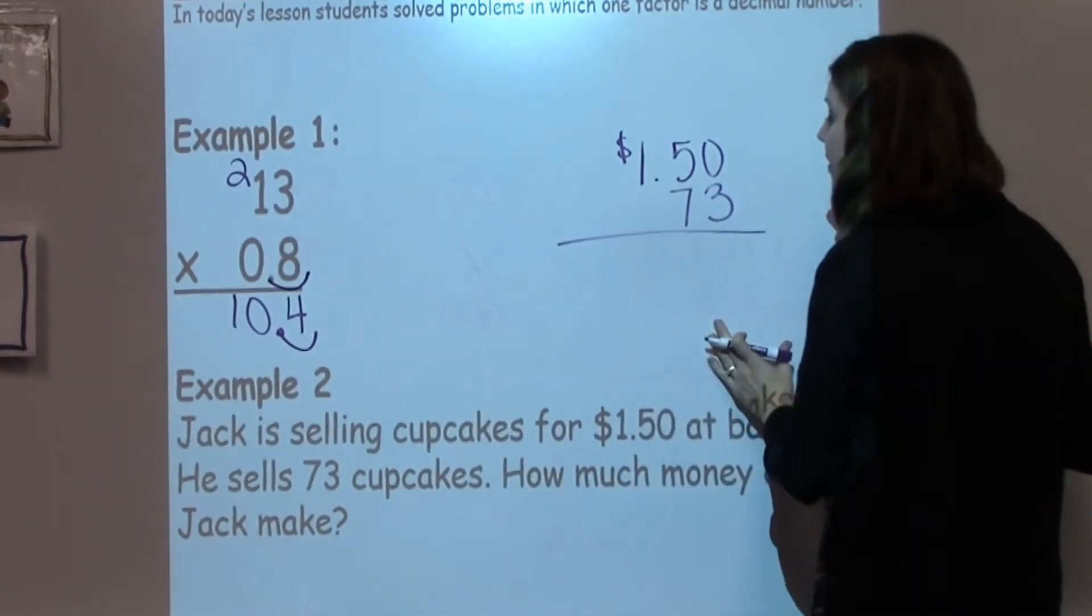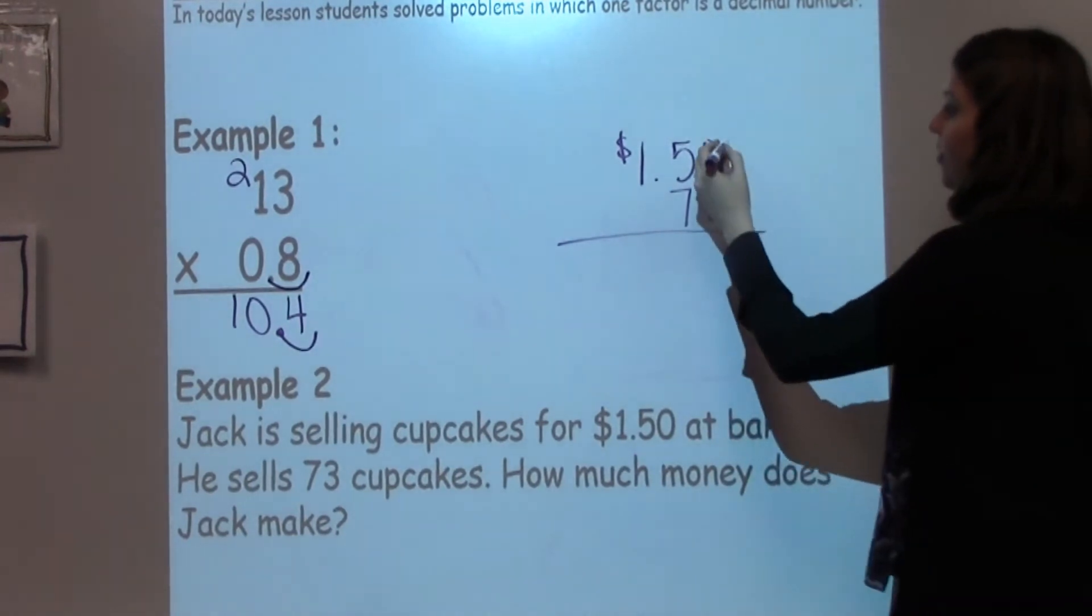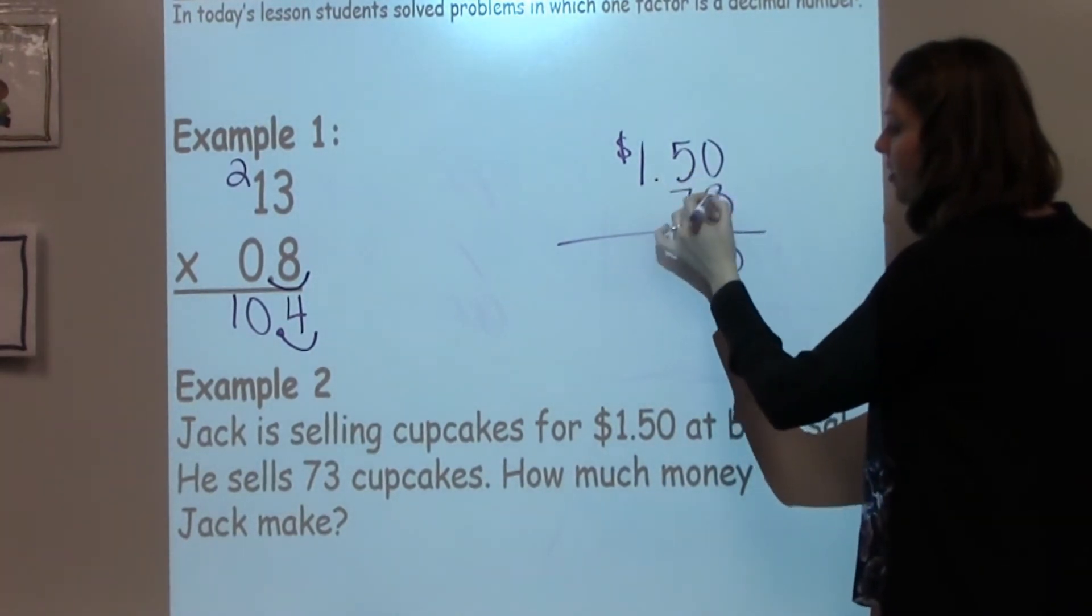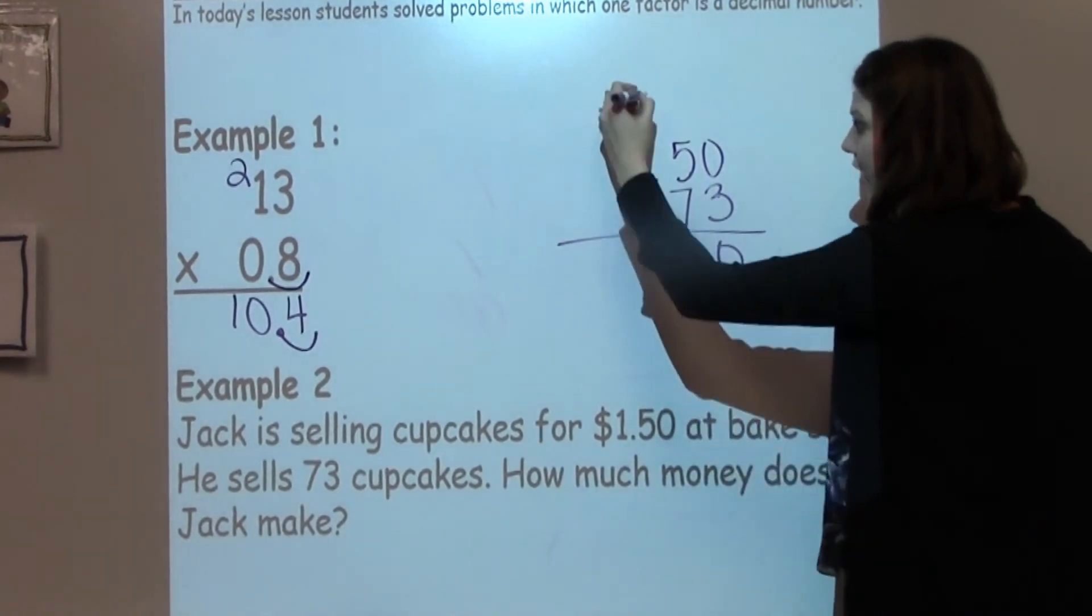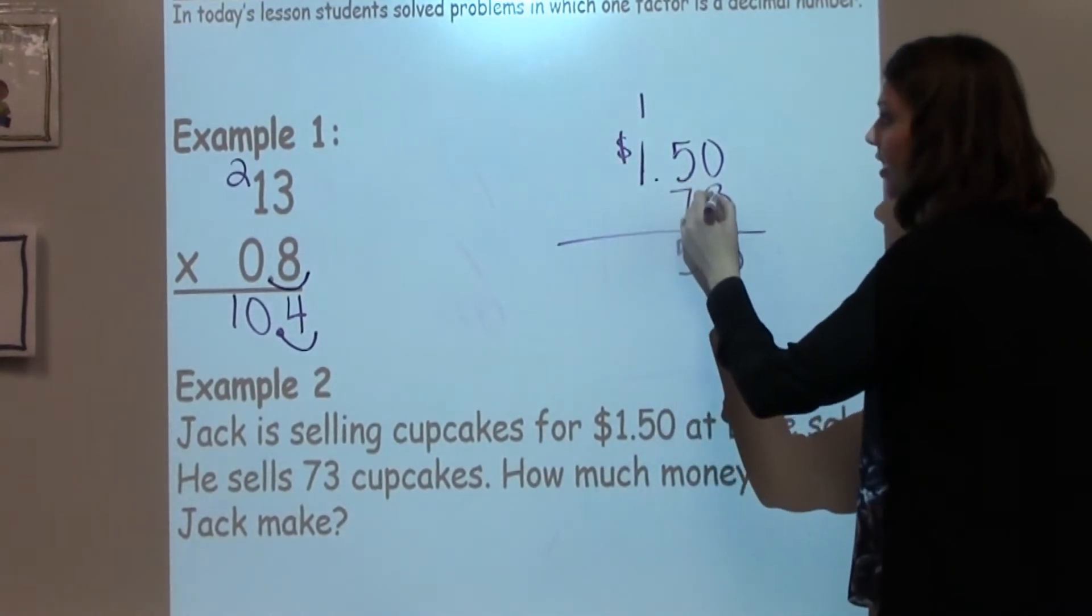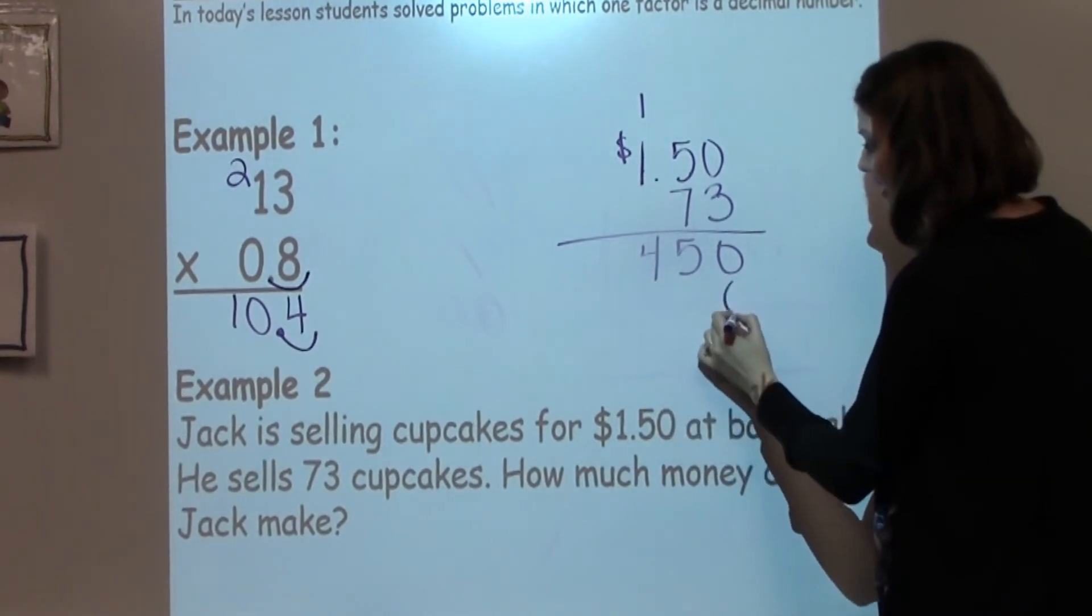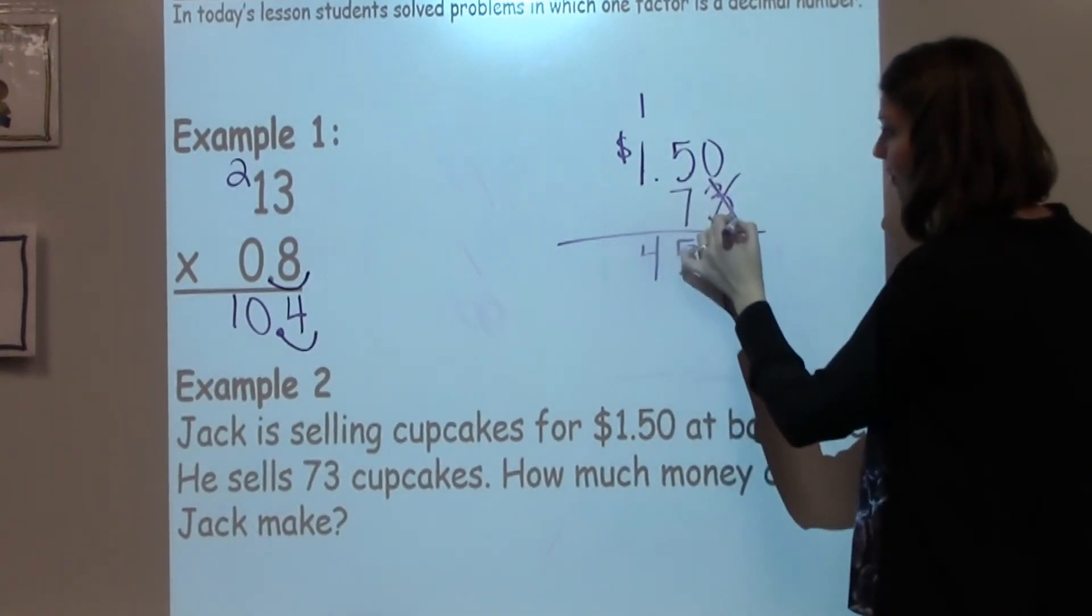I'm going to multiply traditionally with this problem as well. So, I know 0 times 3 is 0, 5 times 3 is 15, carry my 1, 1 times 3 is 3 plus 1 more is 4. I'm going to put my 0 down from my placeholder because I multiply by my 1's.